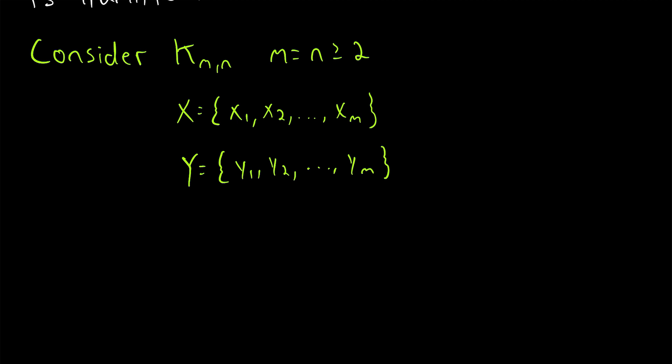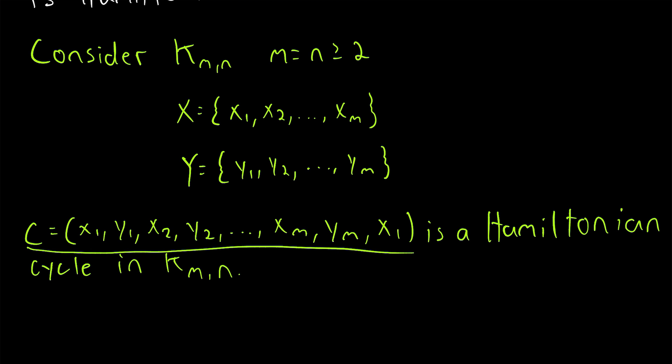Let's go ahead and write that cycle a little more formally. We'll call this cycle C. It starts in the partite set X at vertex x_1, then goes to y_1, then to x_2, then to y_2, and so on, all the way up to the last vertex of partite set X, then to the last vertex of partite set Y, and then returning to x_1 where it started, completing the Hamiltonian cycle. Since this is a Hamiltonian cycle in our complete bipartite graph, we know it is Hamiltonian.